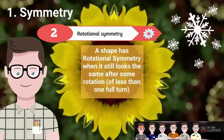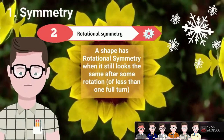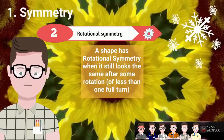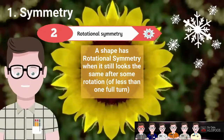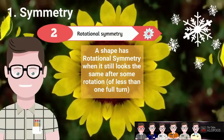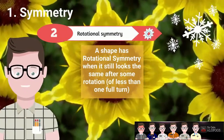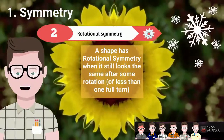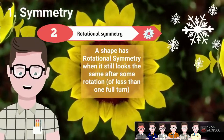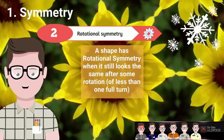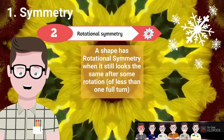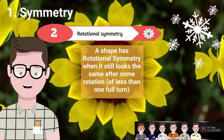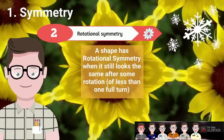Rotational symmetry, also known as radial symmetry in biology, is the property a form has when it looks the same after any rotation by a partial turn. The degree of rotational symmetry of an object is the number of distinct orientations in which it looks exactly the same with each rotation — these are objects that look the same even when rotated.